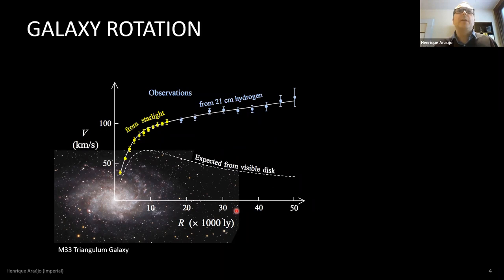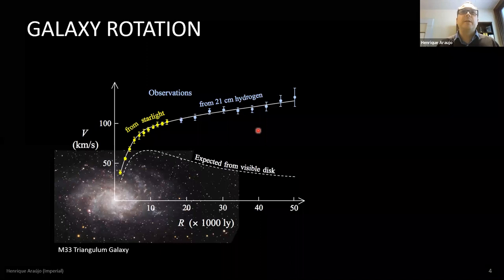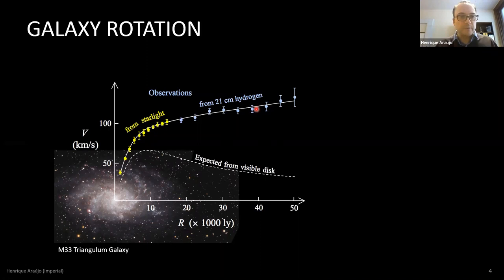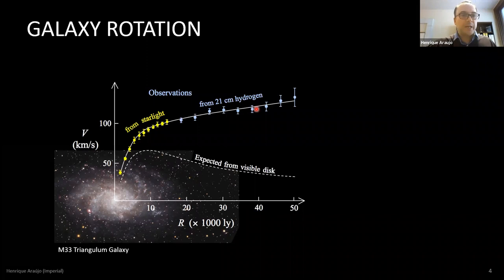At some point you run out of starlight, but you can still use hydrogen gas in the outer regions of galaxies. You can keep measuring via the Doppler shift of the 21-centimeter line from hydrogen, and even out where there are no visible objects, that velocity is not dropping. They repeated this for a dozen galaxies; we now have thousands, and they all behave the same way.